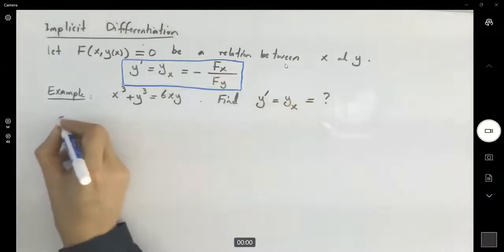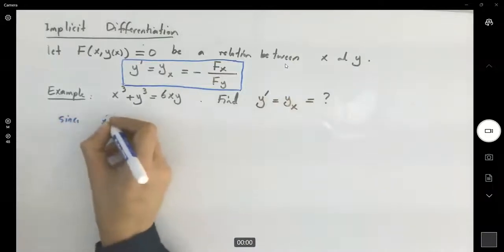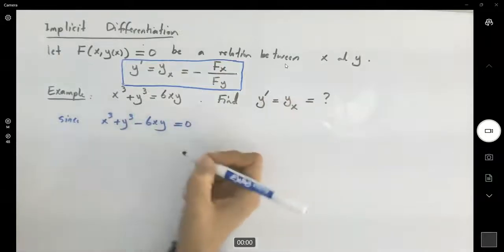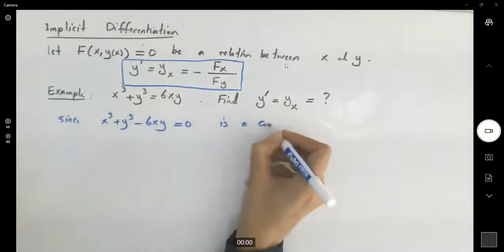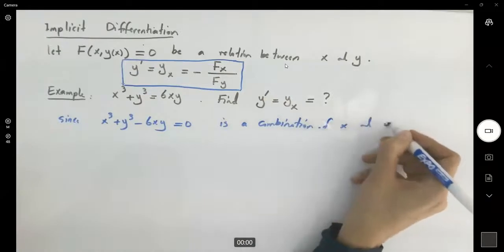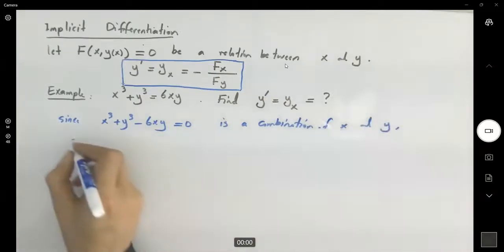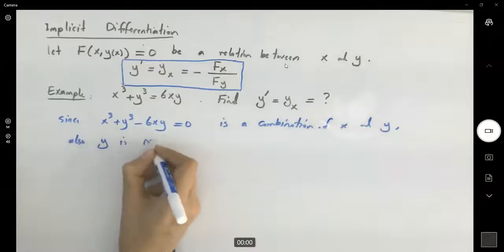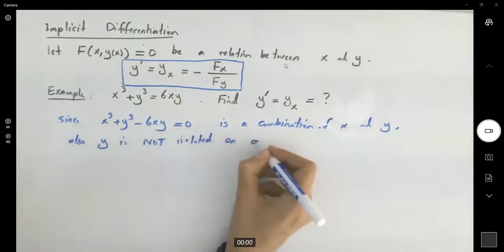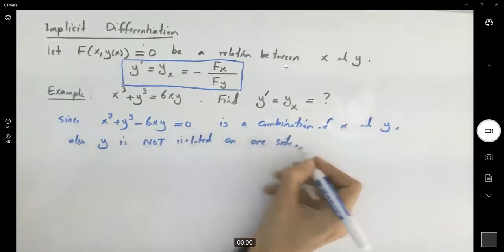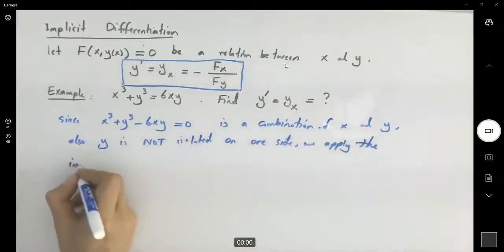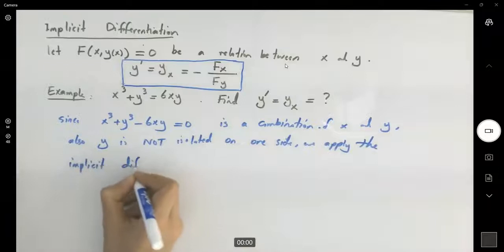Since x³ + y³ - 6xy = 0 is a combination of x and y, and y is not isolated on one side, we apply the implicit differentiation formula.